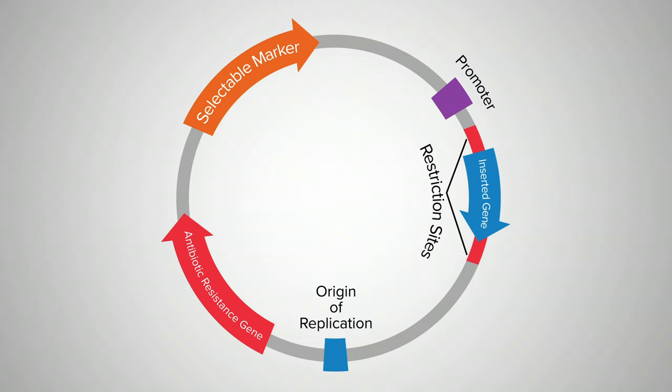All plasmids contain an origin of replication or ORI. It tells the plasmid where to begin replication.